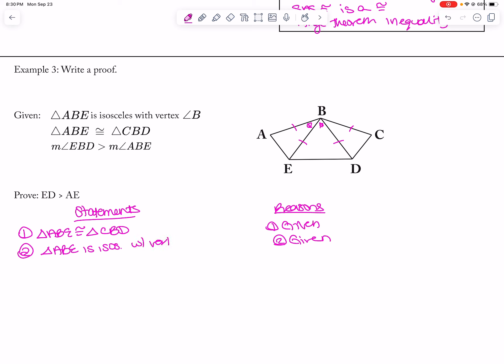So then we would say triangle ABE and triangle CBD are isosceles, and that would be substitution. And then we would know that AB is equal to EB, which is equal to DB, which is equal to CB. And that's definition of an isosceles triangle.